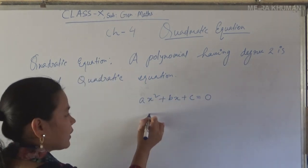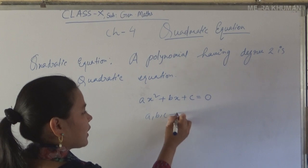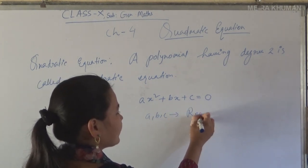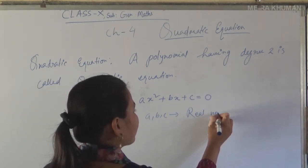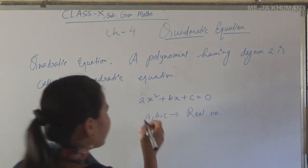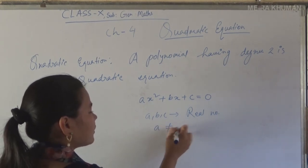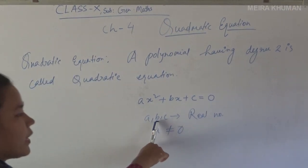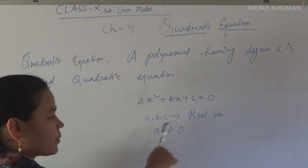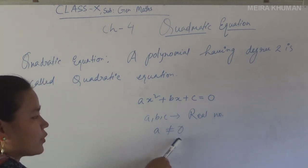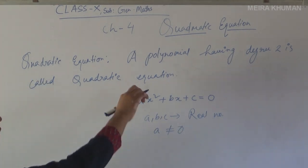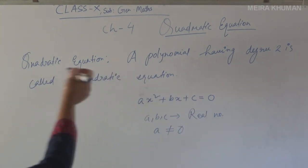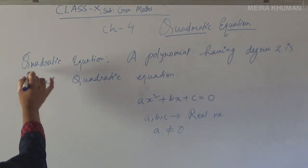Here a, b, and c are real numbers. Also, a should not be 0. b and c may be 0, but a must not equal 0. So this polynomial of degree 2 is called a quadratic equation.